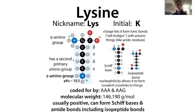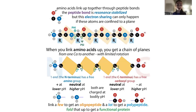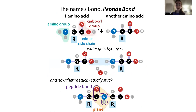In more formal terms, lysine has a second primary amino group. All amino acids have an amino group and a carboxylic acid group — that's why they're called amino acids. Typically these are in their ionic state: the amino group is protonated and the carboxylic acid is deprotonated to form a carboxylate group.